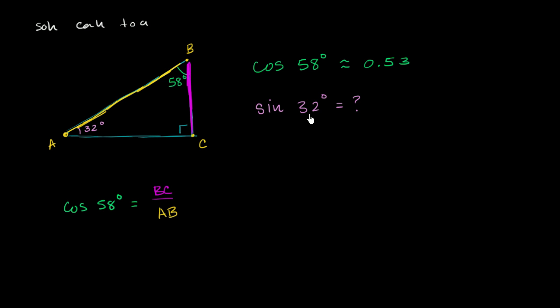Now let's think about what the sine of 32 degrees would be. So the sine of 32 degrees. Well, sine is opposite over hypotenuse. So now we're looking at this 32 degree angle. What side is opposite it? Well, it opens up onto BC. It opens up onto BC, just like that. And what's the hypotenuse? Well, the length of the hypotenuse is AB.